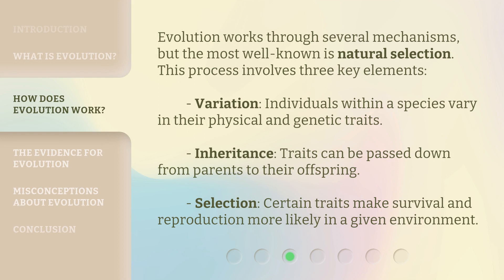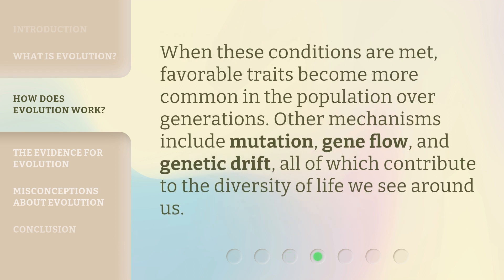Evolution works through several mechanisms, but the most well-known is natural selection. This process involves three key elements: Variation — individuals within a species vary in their physical and genetic traits; Inheritance — traits can be passed down from parents to their offspring; and Selection — certain traits make survival and reproduction more likely in a given environment. When these conditions are met, favorable traits become more common in the population over generations. Other mechanisms include mutation, gene flow, and genetic drift, all of which contribute to the diversity of life we see around us.